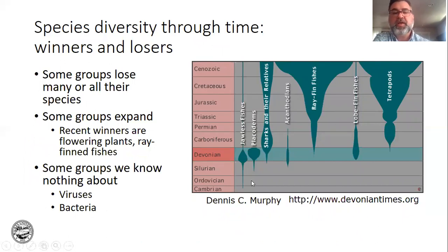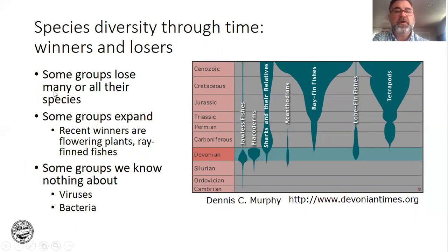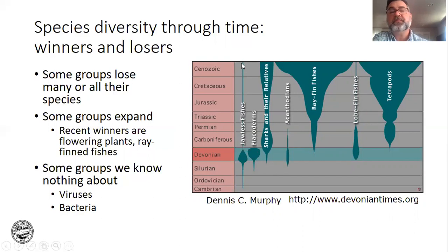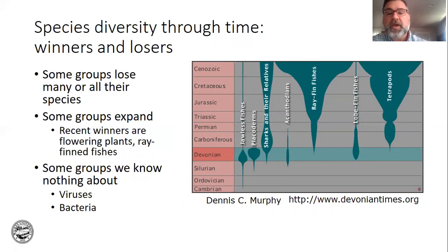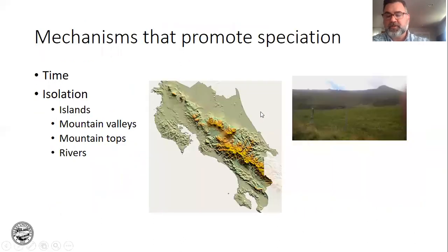Looking down through time combining taxonomy and time together: some groups go extinct and are gone completely, while some have extinctions and never recover. A good example would be the jawless fishes, which include the lampreys. There are at least two species in Pennsylvania — a small brook lamprey, which is an endangered species, and a lamprey in the Great Lakes, which is actually an invasive species that has harmed the fisheries because they're parasitic on things like trout and salmon. Once numerous in the Devonian, they're left with very few species.